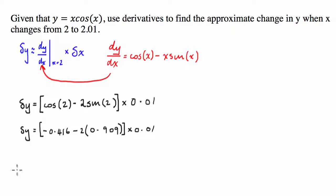So what we have then is we have delta y is equal to this part of the function, which is negative 2.235 times by 0.01.